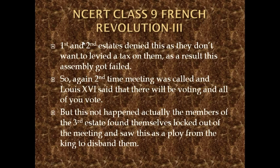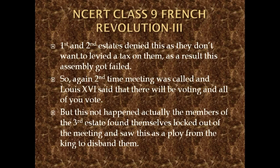The first and second states denied the proposal because they did not want tax levied on them. As a result, the assembly failed. The first and second states did not want tax imposed on them — they had been living a lavish and luxurious lifestyle without paying any tax. So they revolted and the assembly failed.